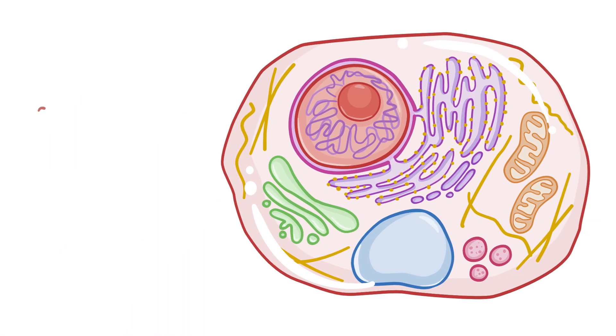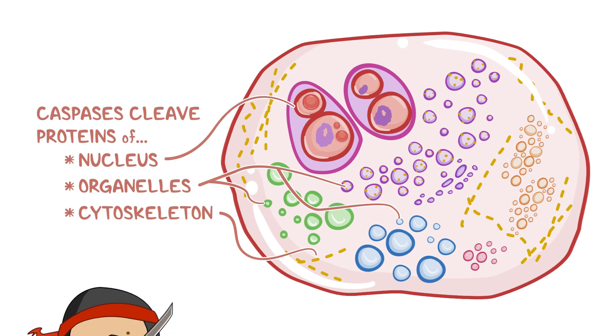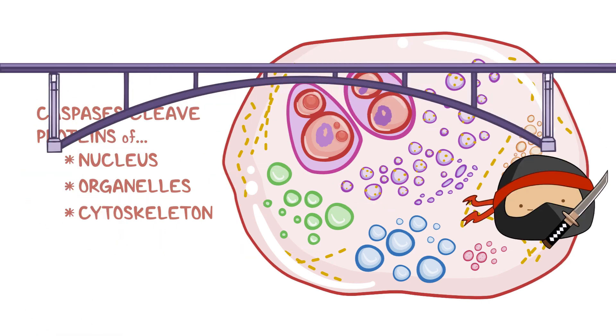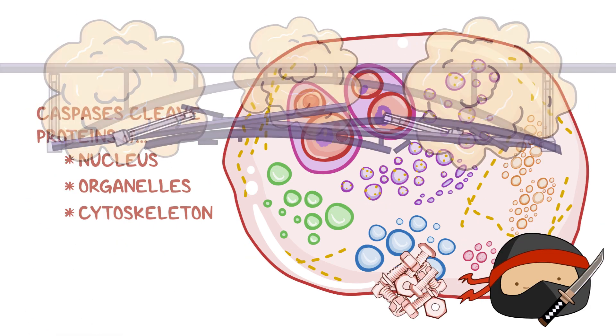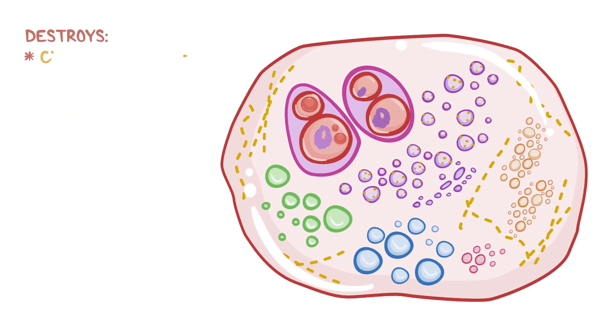That's because these caspases cleave the proteins that make up the cell's nucleus, organelles, and cytoskeleton, a bit like a ninja sabotaging a bridge by removing its nuts and bolts. This destroys the cytoskeleton, as well as the proteins that anchor the cytoskeleton to the cell membrane.